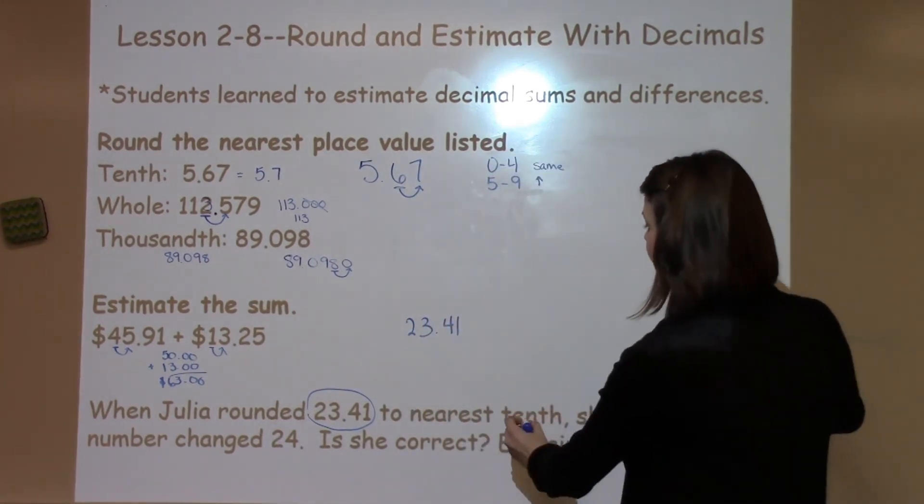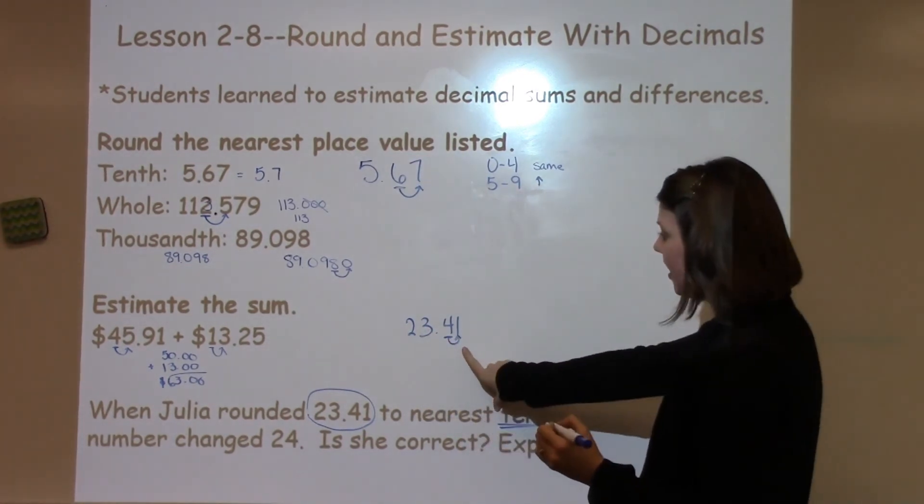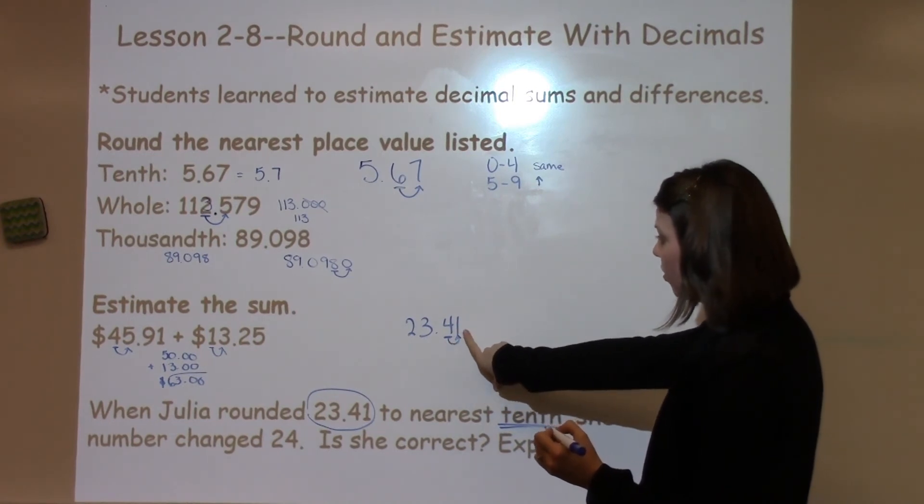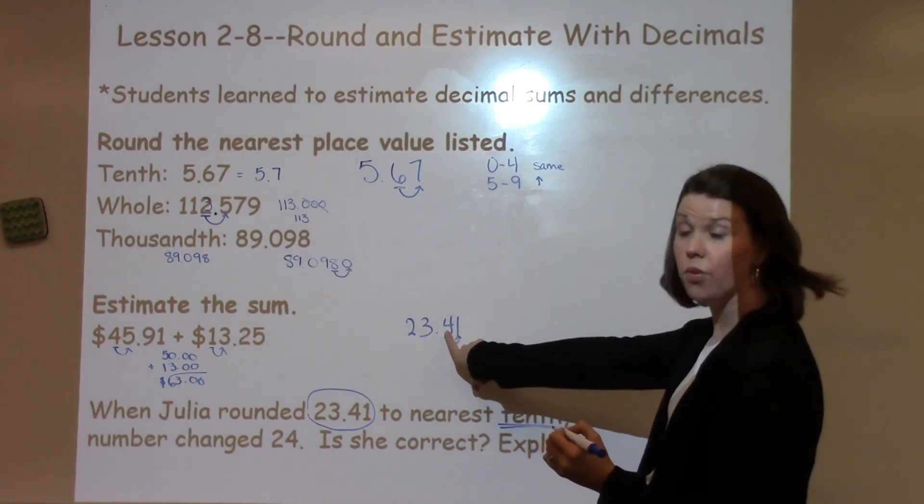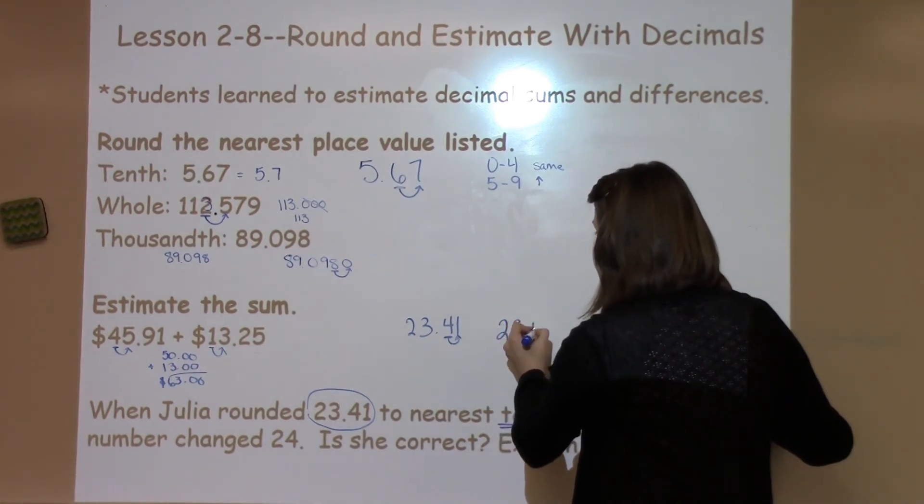She needs to round it to the nearest tenth. I'm going to underline the tenth spot. When I round this to the tenth, I see that there's a 1 next door, which is going to keep it at just 4. So in this case, the answer should have been 23.4. So is Julia correct?